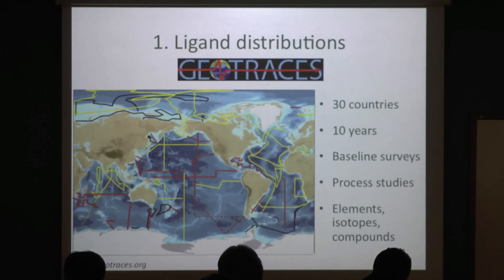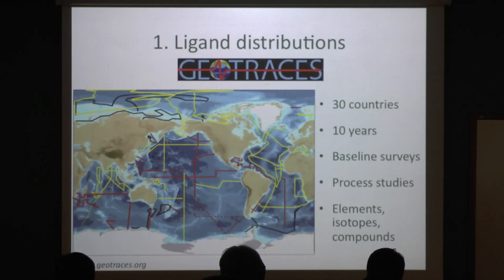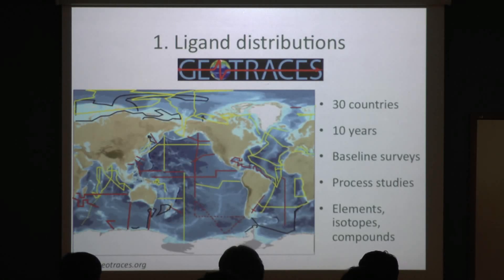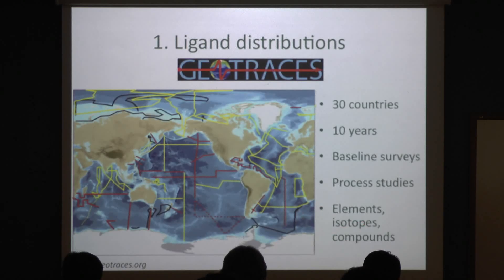The GeoTraces program involves 30 countries and started in 2010. It will take 10 years to accomplish our baseline survey data, following these maps — yellow lines are completed so far, black lines from International Polar Year cruises, and red lines are planned. This covers basically every element in the periodic table, give or take, plus the relevant isotopes and compounds used as tracers.